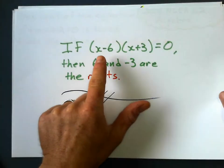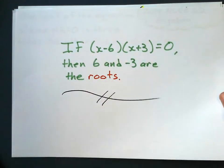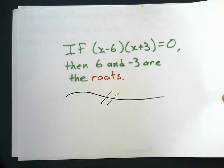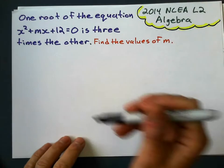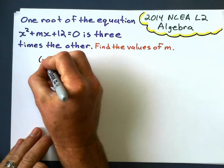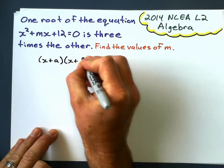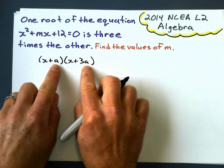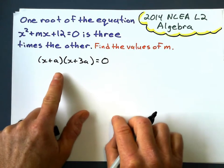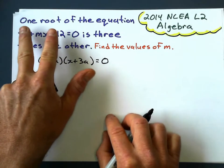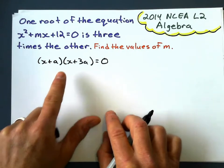If we have a factorized quadratic — x minus 6 times x plus 3 equals 0 — then 6 and negative 3 represent the roots of the equation, sometimes called the solutions. So if one root is 3 times the other, let's call that value a. That means the roots look like a and 3a. That's the setup of this equation.